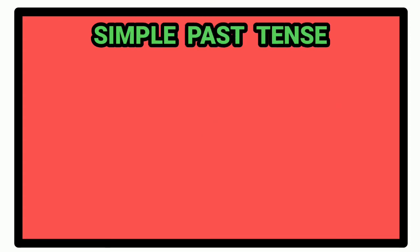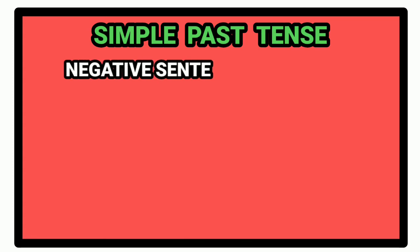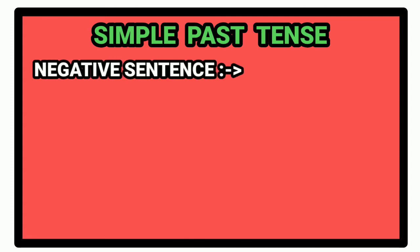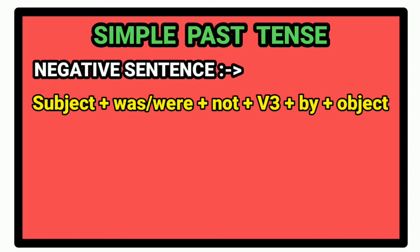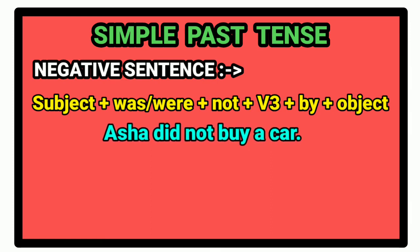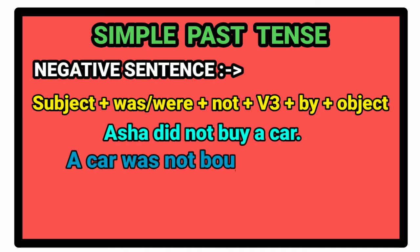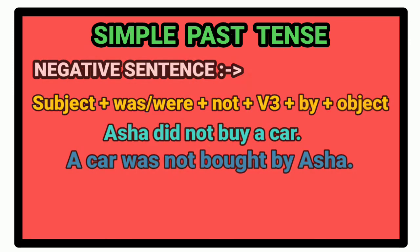Next is simple past tense. In simple past tense, for making the negative sentence, we follow the following rule. First of all, subject. After that, auxiliary verb was or were. Then not. After that, the past participle form of the verb. And then the preposition by. In the end, we write object. For example, Asha did not buy a car. Passive voice will be: a car was not bought by Asha.